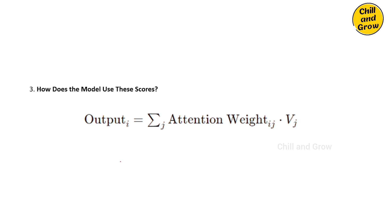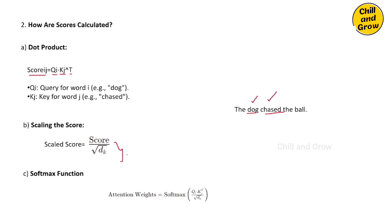The attention weight is here. The softmax function is applied here. The attention weight is equal to softmax of qi — the first word is the query vector, the second word is the key vector — multiplied by square root of dk. That is the softmax function. We can also calculate the scaled score, and take the softmax of the scaled score.